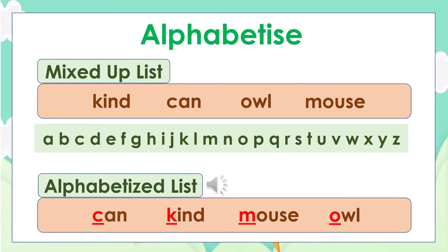Here we have a mixed-up list: kind, can, owl, and mouse. When we arrange them according to the alphabet, we get the alphabetized list: can, kind, mouse, and owl.